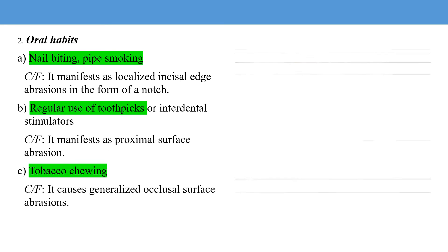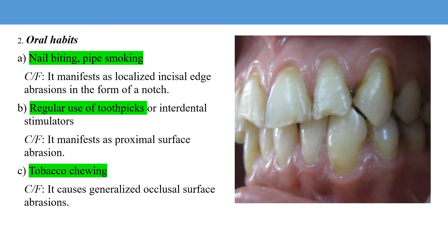Oral habits are another cause of abrasion. Nail biting or pipe smoking manifests as localized incisal edge abrasion in the form of a notch. Regular use of toothpicks or interdental stimulators produces abrasion facets in the interproximal areas. Tobacco chewing results in generalized occlusal surface abrasions.